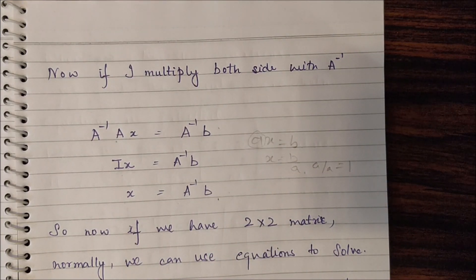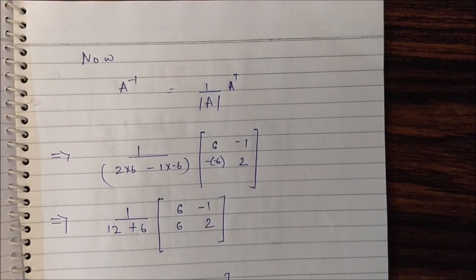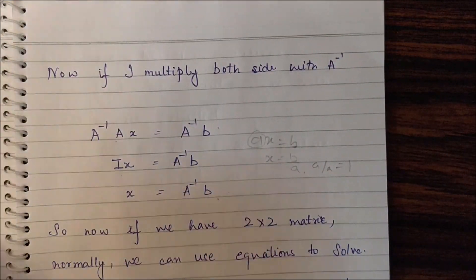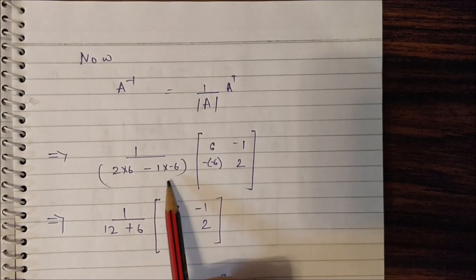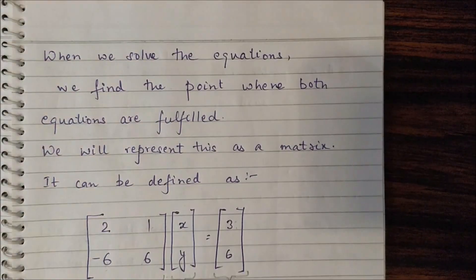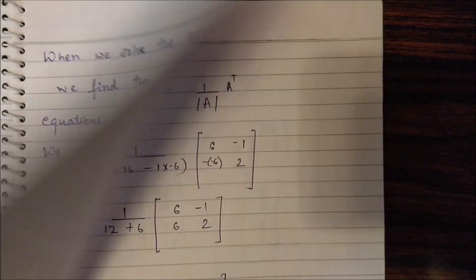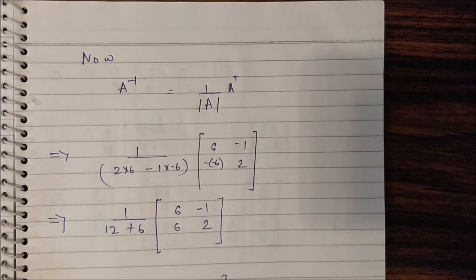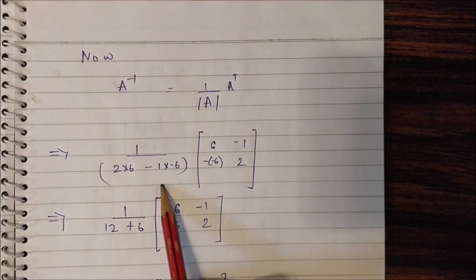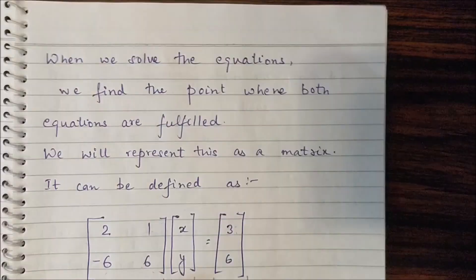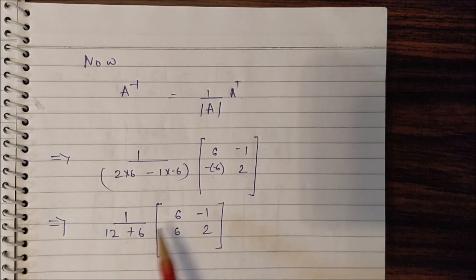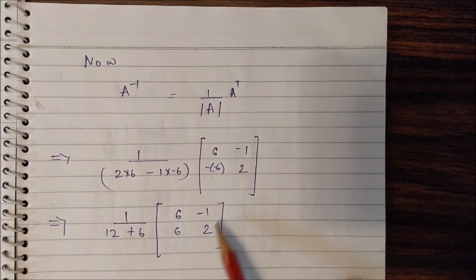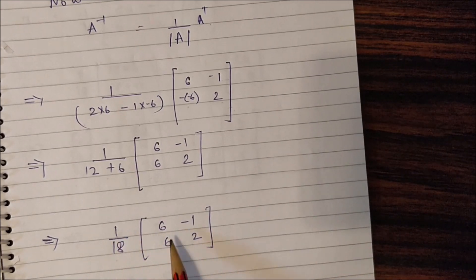Now we need to find A inverse. For a 2×2 matrix, A inverse is calculated as the transpose of A multiplied by 1 over the determinant of A. The determinant is 2 times 6 minus 1 times minus 6, which gives 12 plus 6 equals 18. For the transpose of a 2×2 matrix, we swap positions and change signs. So A inverse equals 1 over 18 times the transposed matrix [[6, -1], [6, 2]].